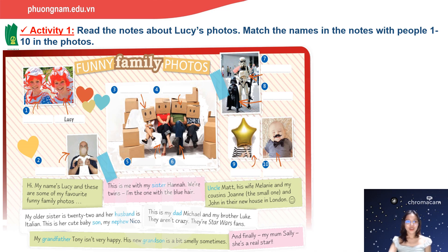Now you look at the picture. Compare with the features that we read about the family members in this note and match them with the names of those members. Bây giờ sau khi mình đã đọc xong rồi, thì các bạn sẽ cố gắng tìm những đặc điểm được miêu tả về từng thành viên trong gia đình này. Và mình sẽ điền tên của họ tương ứng với những bức ảnh từ 1 đến 10. You can pause this video for 3 minutes to complete this activity and then check your answers with me.